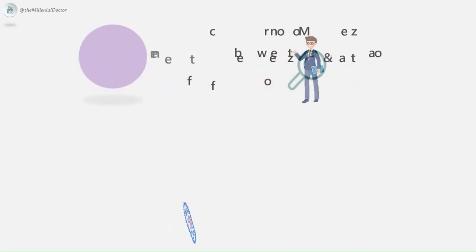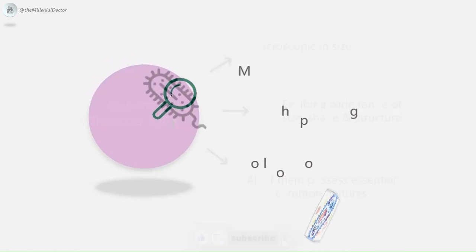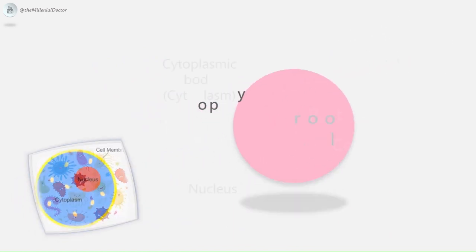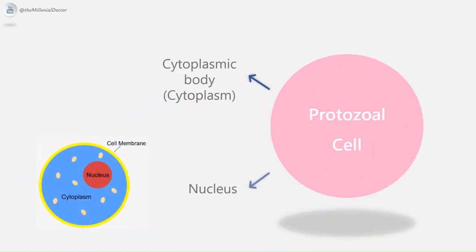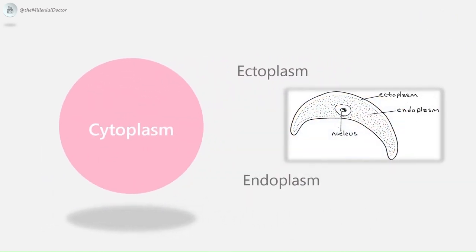Protozoa are microscopic in size, best seen under the high-power objective of a light microscope. They exhibit a wide range of size, shape, and structure, and all of them possess essential common features. Moving to morphology: a protozoal cell is divided into two parts — the cytoplasmic body (cytoplasm) and the nucleus. All parasitic organisms are eukaryotes.